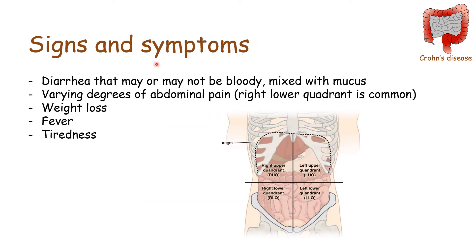Signs and symptoms more particular to Crohn's disease include diarrhea that may or may not be bloody and is often mixed with mucus. In ulcerative colitis it's very common to have bloody diarrhea, but in Crohn's disease it is not as common. There will be varying degrees of abdominal pain depending on severity, but right lower quadrant pain is common because Crohn's often affects the terminal ileum, which sits where it connects to the cecum in the right lower quadrant. There will also be weight loss, fever, and tiredness.